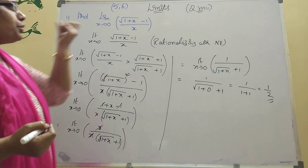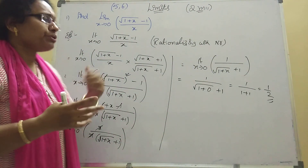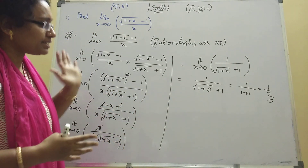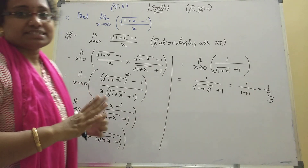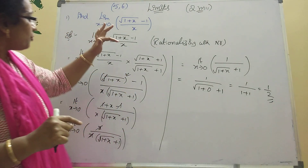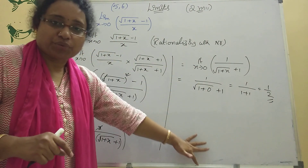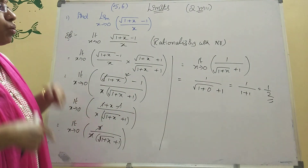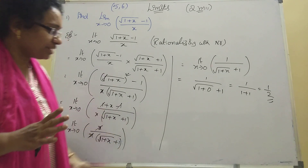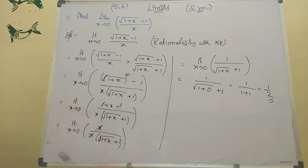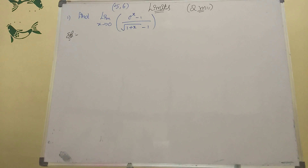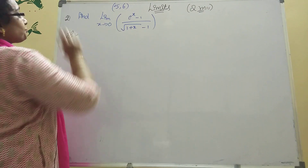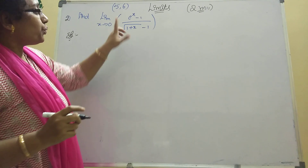Apply x equals 0: 1 divided by root(1 plus 0) plus 1 equals 1 divided by root 1 plus 1 equals 1 by 2. So the answer is 1/2. Easy — just rationalize and you get it. Whether the root is in numerator or denominator, the same method applies. No formula used here, only rationalizing.